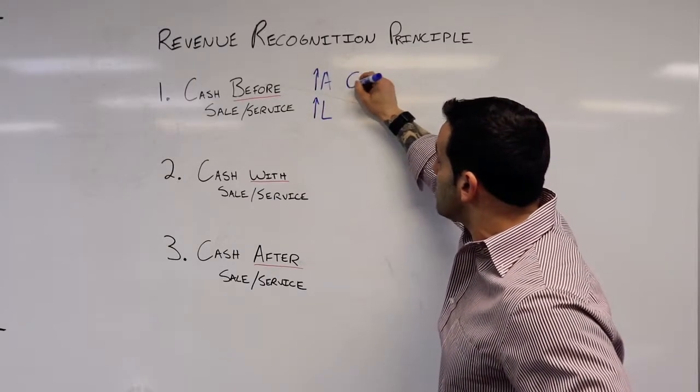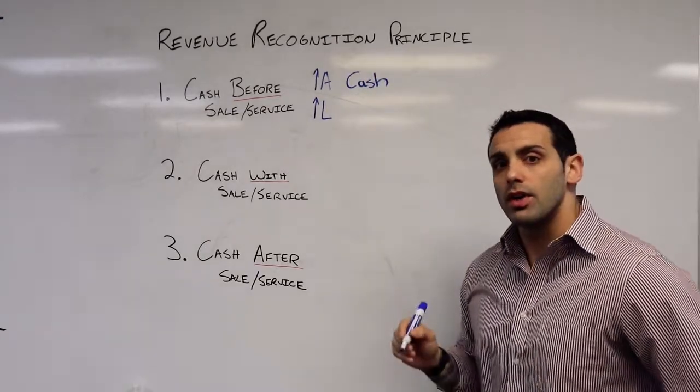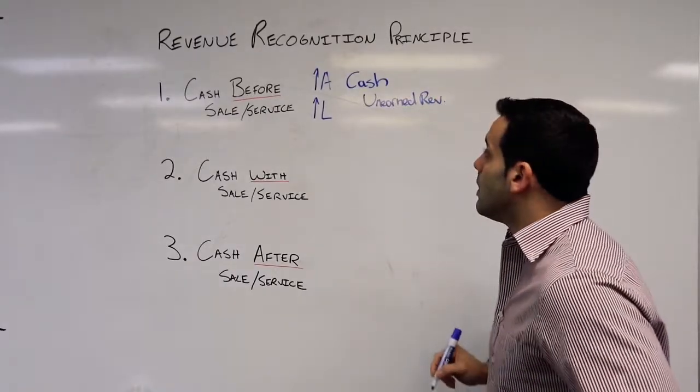So we're going to debit cash because that's our increase, and we're going to credit unearned revenue.